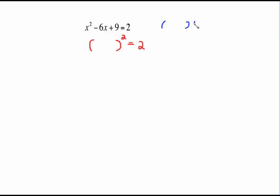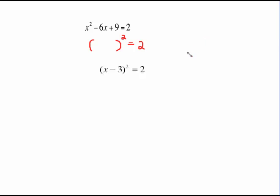If you think about plain old factoring rules, you know you'd have to have an x and an x in the front. What multiplies to give you 9 and adds to give you 6 is 3 and 3. And because this is positive and the middle is negative, we know that the sign in both parentheses is negative. So x minus 3 times x minus 3 is x minus 3 squared. And there we are.